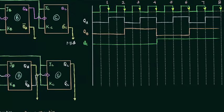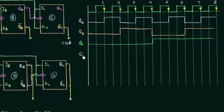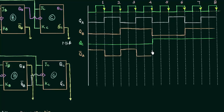Let's draw the waveform for the first circuit. For QA complement, initially QA is 0, so QA complement is 1. We perform every change when the clock goes from high to low — that is the falling edge. For each subsequent falling edge toggling occurs, giving alternating 1 and 0 values. In this way we can complete the output waveform for QA complement, then move on to QB complement.